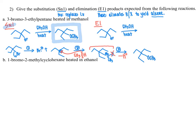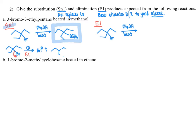Then we go on to the E1 reaction product. For E1, the first step of the mechanism is the same as SN1 — the leaving group leaves at the first step of the E1 pathway. We don't need to do a carbocation rearrangement. That is where things diverge: rather than having methanol come in and attack the carbocation, the methanol is going to act as a base.